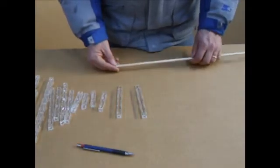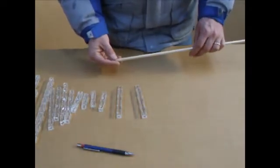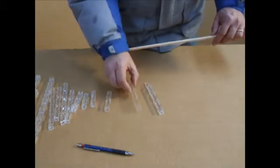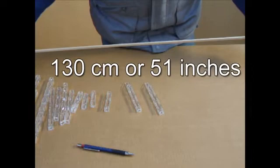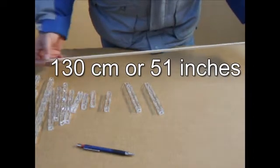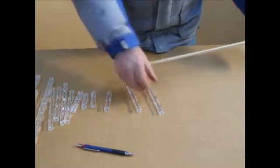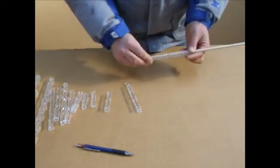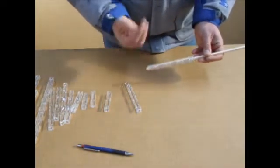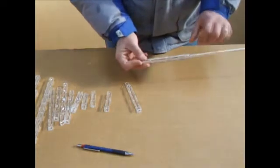Using the element cutting jigs, number A and number B use a full length piece of wood, 130cm or 51 inches long. The jig is placed on the end of the wood with the stencil oriented towards yourself.